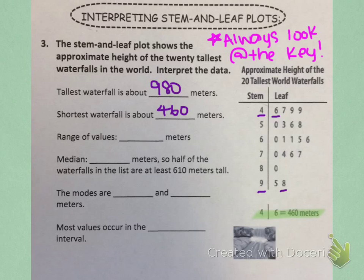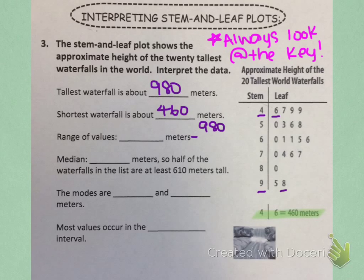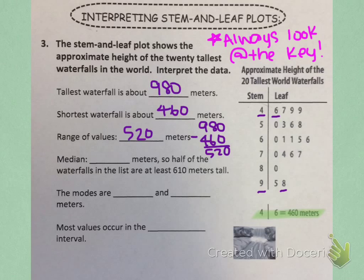To find the range of values, we're going to do the greatest value minus the least value. So that means we're going to do the tallest waterfall minus the shortest waterfall: 980 minus 460. That gives us 520. So the range of values is 520 meters — the difference between the tallest waterfall and the shortest waterfall.